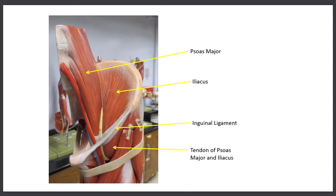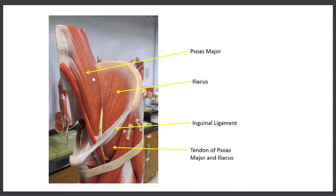The first structure we want to look at, just as a reference point, is this ligament right over here. This is known as the inguinal ligament. On the large leg model we're using today, it's very easy to see two muscles above the inguinal ligament. This first one on our checklist is called the iliacus muscle — it actually sits right in the fossa of the ilium, or the iliac fossa. And then this one here is actually coming down from the lumbar spine; this is known as the psoas major. Some people will actually consider this one muscle — they call it the iliopsoas.